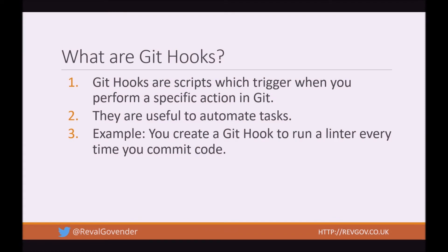So what are Git hooks? Git hooks are scripts which are triggered when you perform a specific action in Git. They are useful to automate tasks. For example, you can create a Git hook to run a linter every time you commit code.